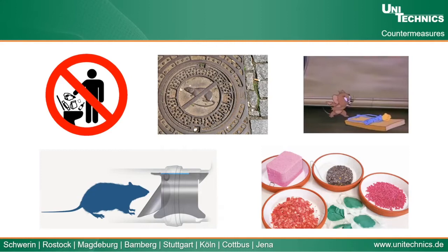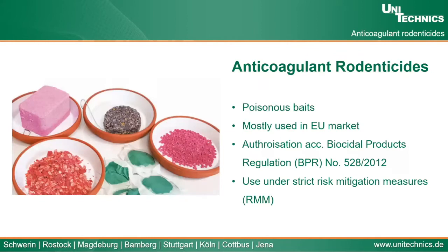The most commonly used method now is poisonous baits for rats. This kind of bait is called anticoagulant rodenticides. They are mostly used in the European Union market. Since they are poisonous, their authorization is governed by the Biocidal Products Regulation number 528/2012, and their use is under strict risk mitigation measures.